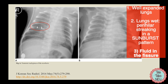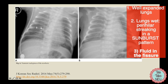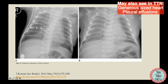The other finding you can see here clearly is fluid between the lung lobes, or what we call fluid in the fissure. We see this mostly between the right upper lobe and the right middle lobe. As an aside, the left lung has two lobes and the right has three, which may explain why we see the fluid in this fissure. Other findings in TTN include a slightly generously-sized heart and possibly pleural effusions, though we don't really see those here.